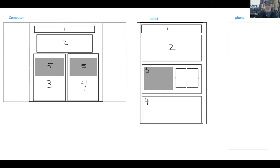This is why we draw things out - it helps us understand where things are going to be on the page, whether we need another left and another right.